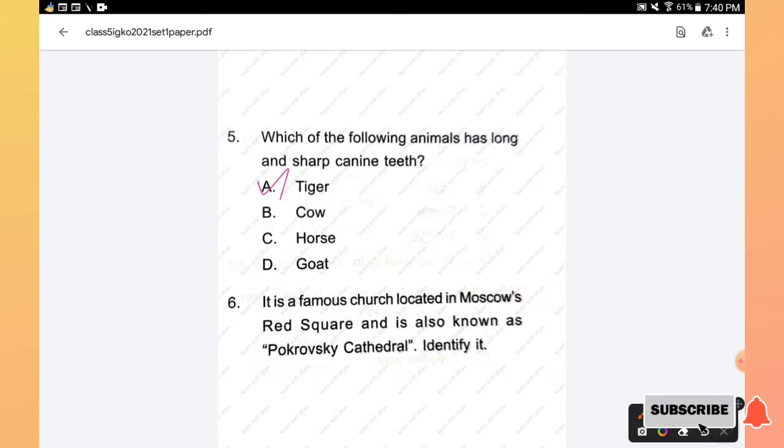Question number 5: Which of the following animals has long and sharp canine teeth? Tiger, cow, horse, goat. The right answer is option A, tiger.